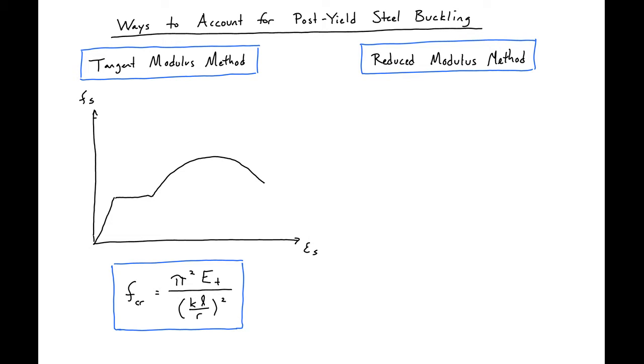And it involves the steel stiffness, E sub S or I'm labeling it E sub T. So the first thing, the first way we can account for post-yield steel buckling would be to change the stiffness based on the stiffness shown in the plot.